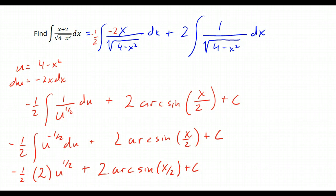Okay, so our final answer is going to be the negative 1 half and the 2 cancel, so I get negative the square root of u, which remember is 4 minus x squared, plus 2 arc sine of x over 2 plus c.